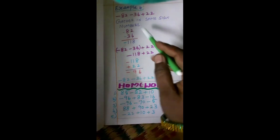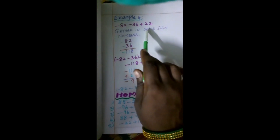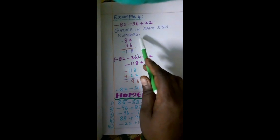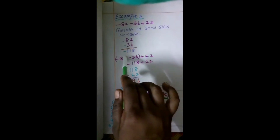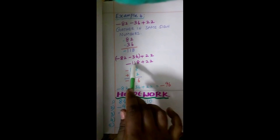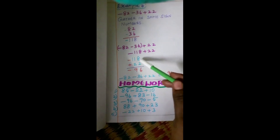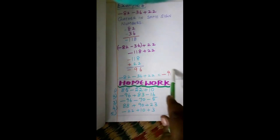Next, we move on to Example 4: minus 82 minus 36 plus 22. These 3 numbers contain different signs. First, we gather the same-sign numbers: minus 82 and minus 36 have the same sign, so we add them — 2 plus 6 is 8, 8 plus 3 is 11 — and put the minus sign, giving minus 118. Now minus 118 plus 22 contains different signs, so we subtract: 8 minus 2 is 6; 1 minus 2 is not possible, so we borrow — 11 minus 2 is 9. The greater number is 118, which has a minus sign. So the answer is minus 96.